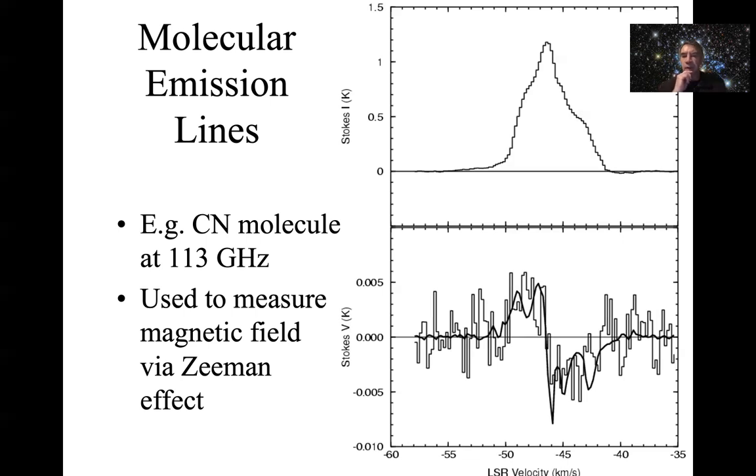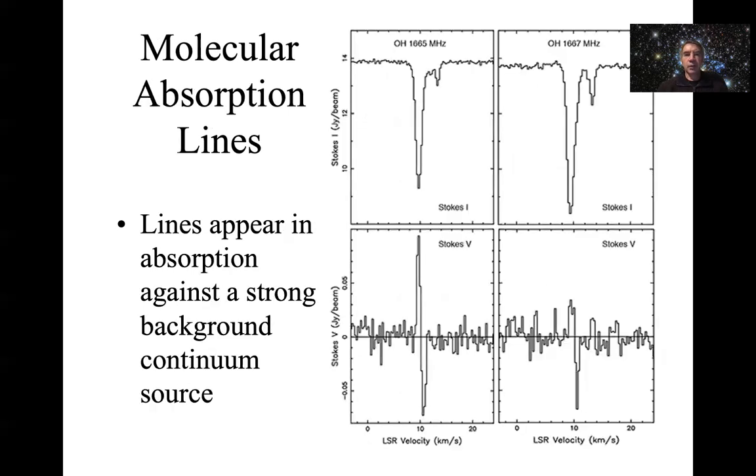The different components split in different directions, so you get different directions of polarization across your line here. The Stokes V you can see goes from positive to negative. That is a telltale sign that you've got this Zeeman effect operating, and the bigger the split, the stronger the magnetic field. So we can measure magnetic field strength in the gas that way.